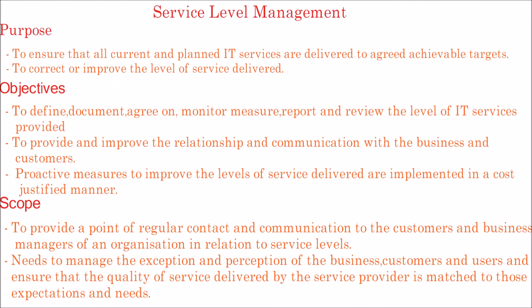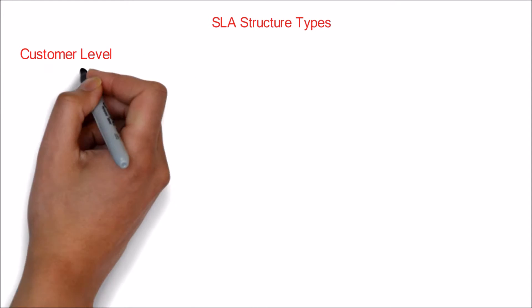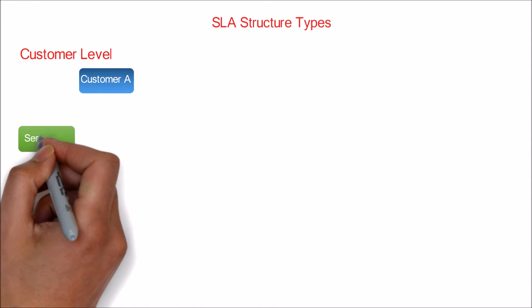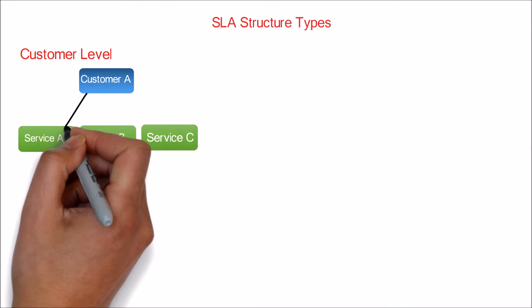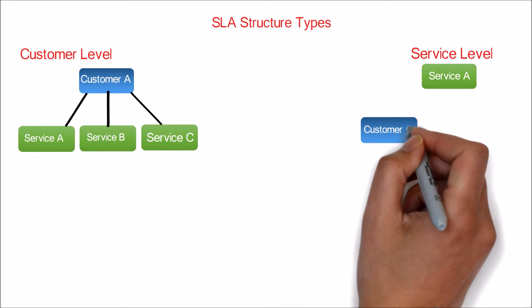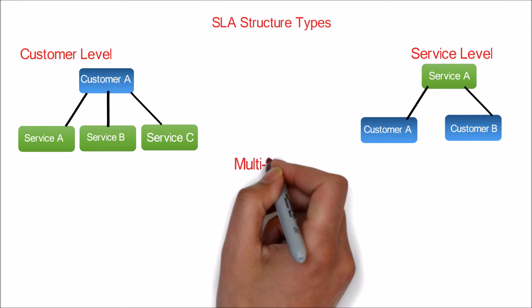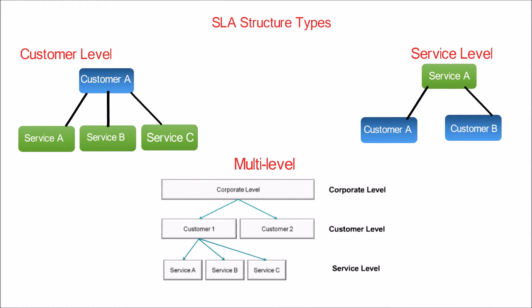This video explains about the three different SLA structures in the ITIL framework. The first one is customer-specific, where those issues specific to a customer can be dealt with. The second is service-specific, where all issues relevant to a specific service can be covered. The third one is multi-level or corporate SLA, where all generic issues pertaining to the organization are covered, which are the same for the entire organization.